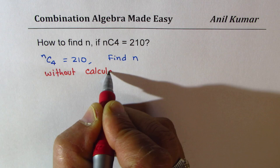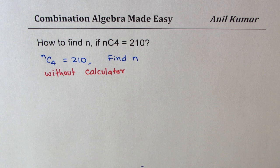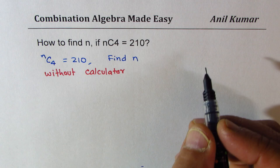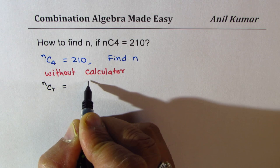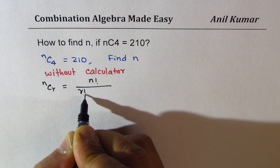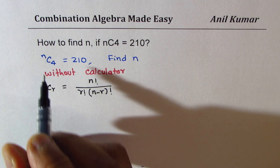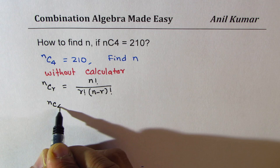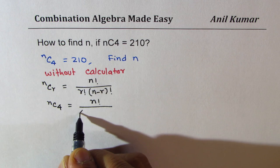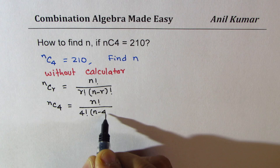So I will show you a technique of doing it. Let us first understand what nCr is. In general, the formula for nCr is n factorial divided by r factorial times n minus r factorial. So in that case I could write nC4 as n factorial divided by 4 factorial times n minus 4 factorial.